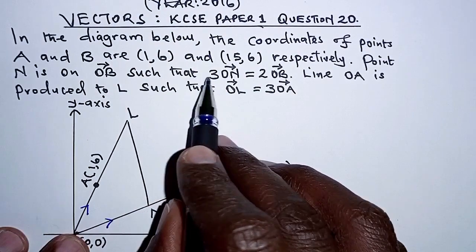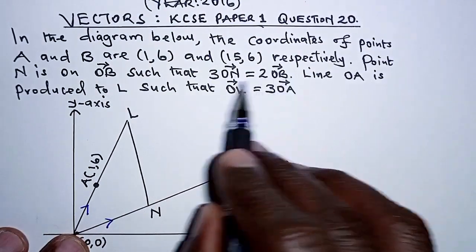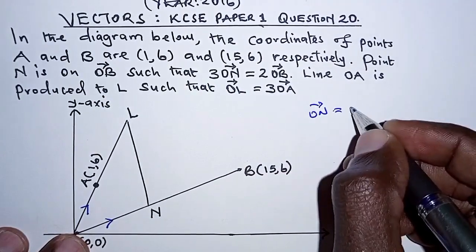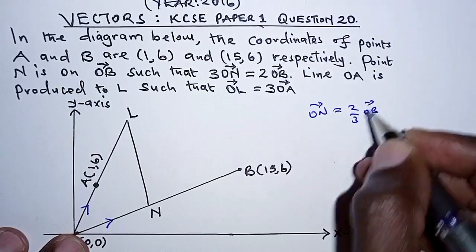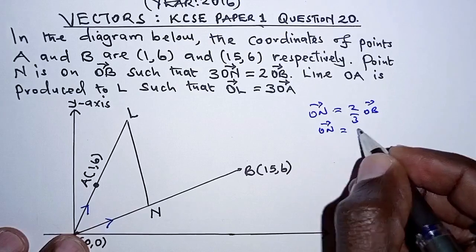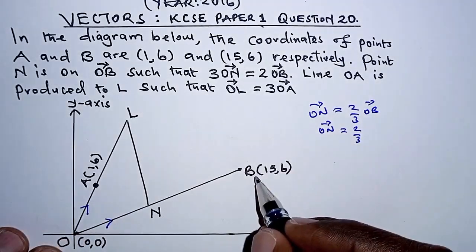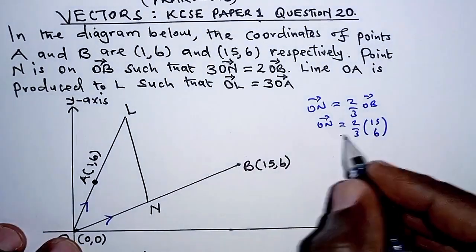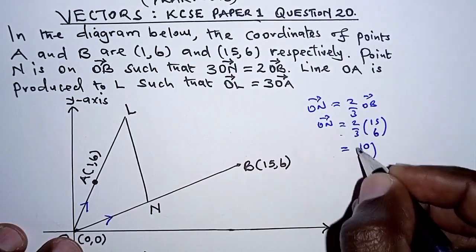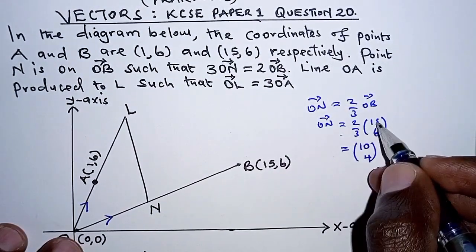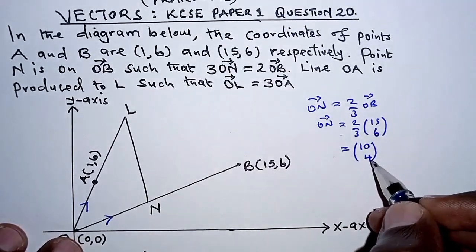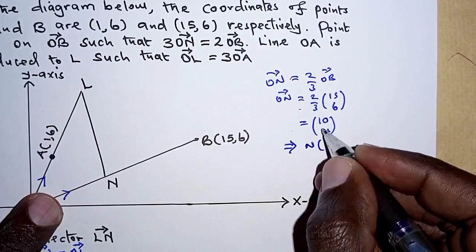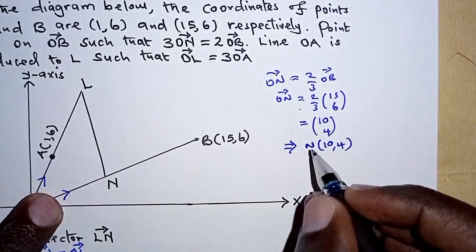From the previous part we were told that 3ON equals 2OB. Dividing both sides by 3, we get ON equals 2/3 of OB. Therefore ON becomes 2/3 of OB. As a position vector, OB is (15, 6) arranged vertically, so ON becomes (10, 4). That is: 2/3 times 15 is 10, and 2/3 times 6 is 4. This implies that N has coordinates (10, 4).